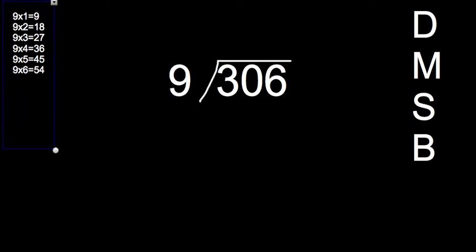First thing you got to do is write your problem down. You got 306 divided by 9, where 306 is the dividend and 9 is the divisor. On the right here you need to put DMSB, and that stands for divide, multiply, subtract, bring down.